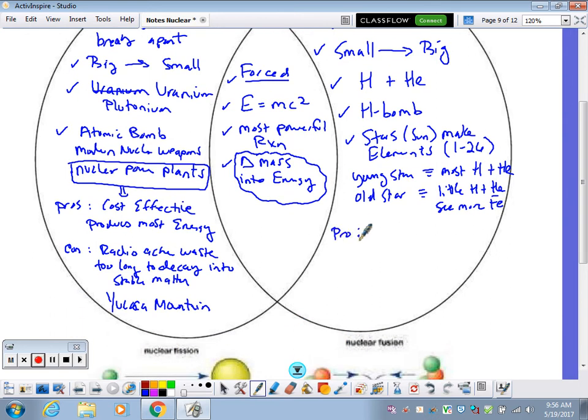The pro to the fusion process is it is the most cost effective. It releases the most energy, more energy than even the fission process. But the major con here is that there is no way to control this reaction on Earth.